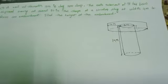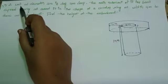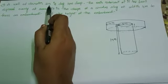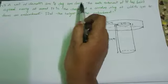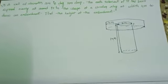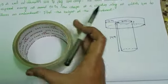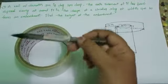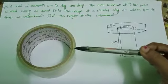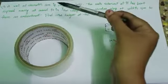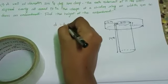Let's discuss the 4th question in exercise 13.3. A well of diameter 3 meters is dug 14 meters deep. We know wells are in cylindrical shape. Suppose this is the well. Given: diameter of the well is 3 meters.